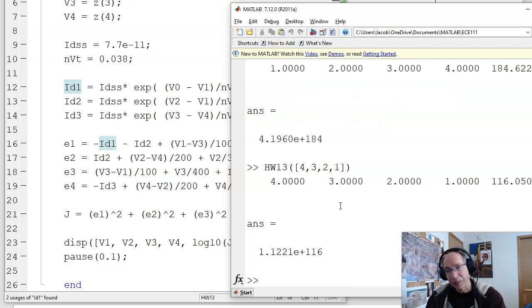So let's try another guess. Let's try 4, 3, 2, 1. And that was better. I'm only up by 10 to the 116th. Let's try 8, 4, 2, 1. That's still better. You can guess, guess again, guess again.